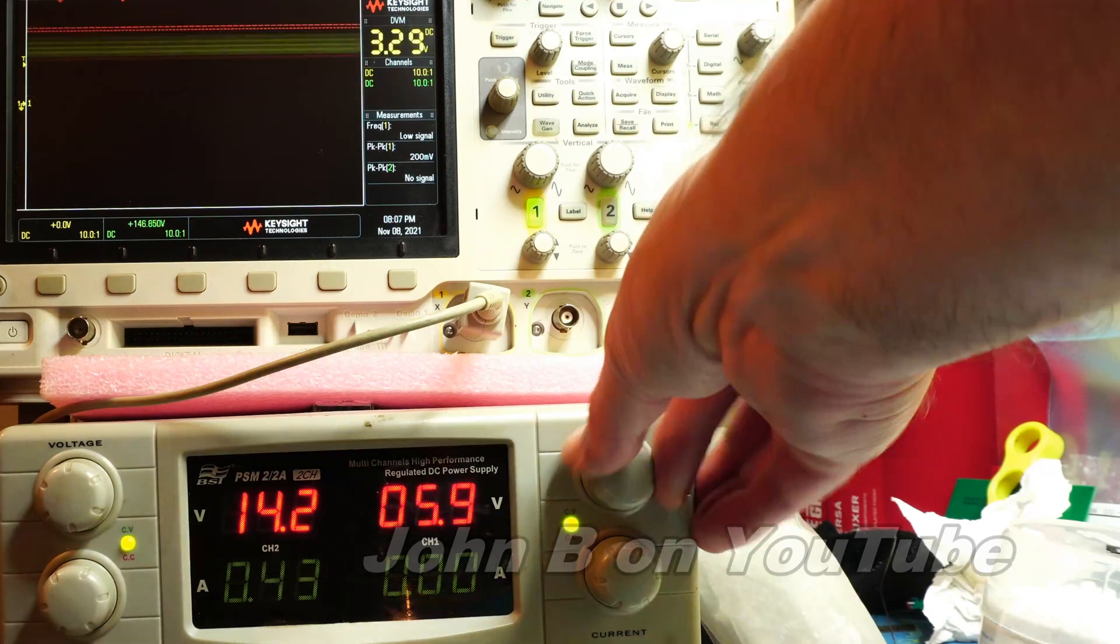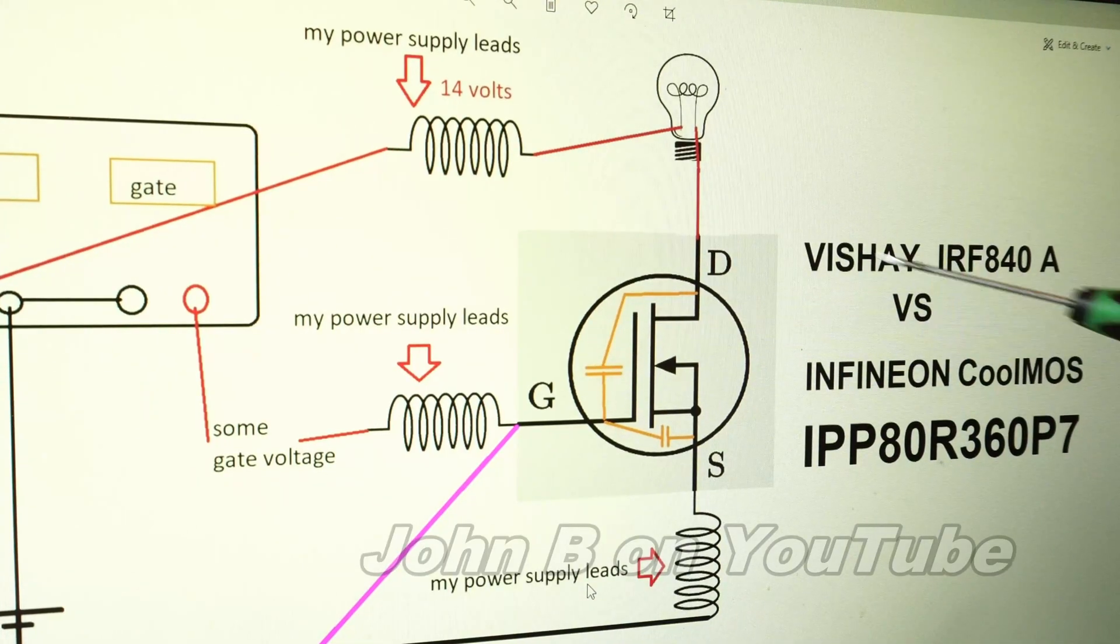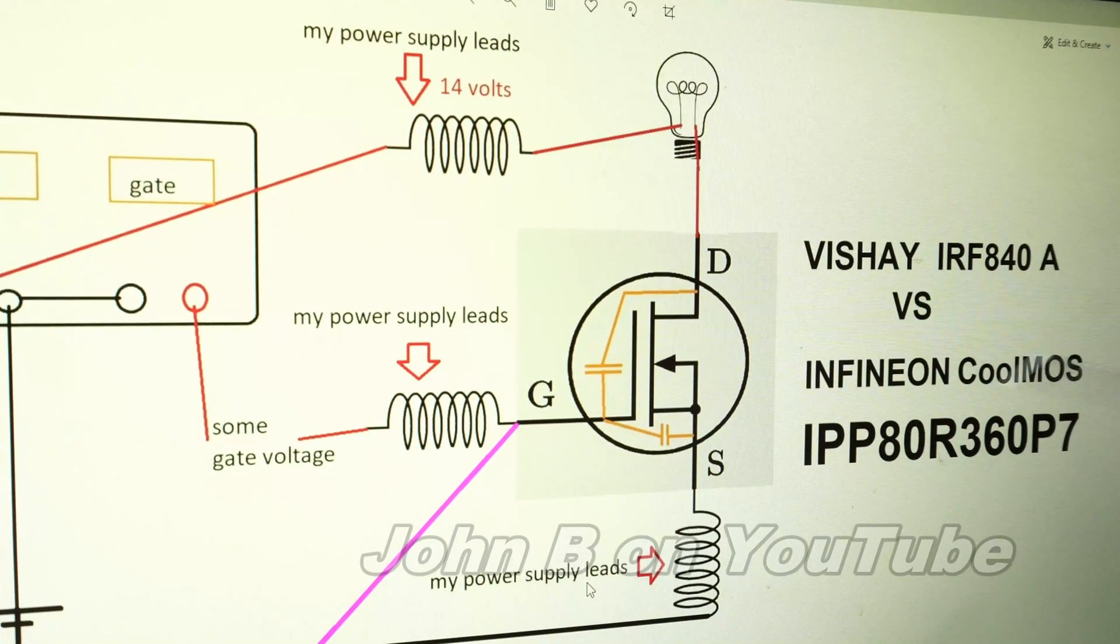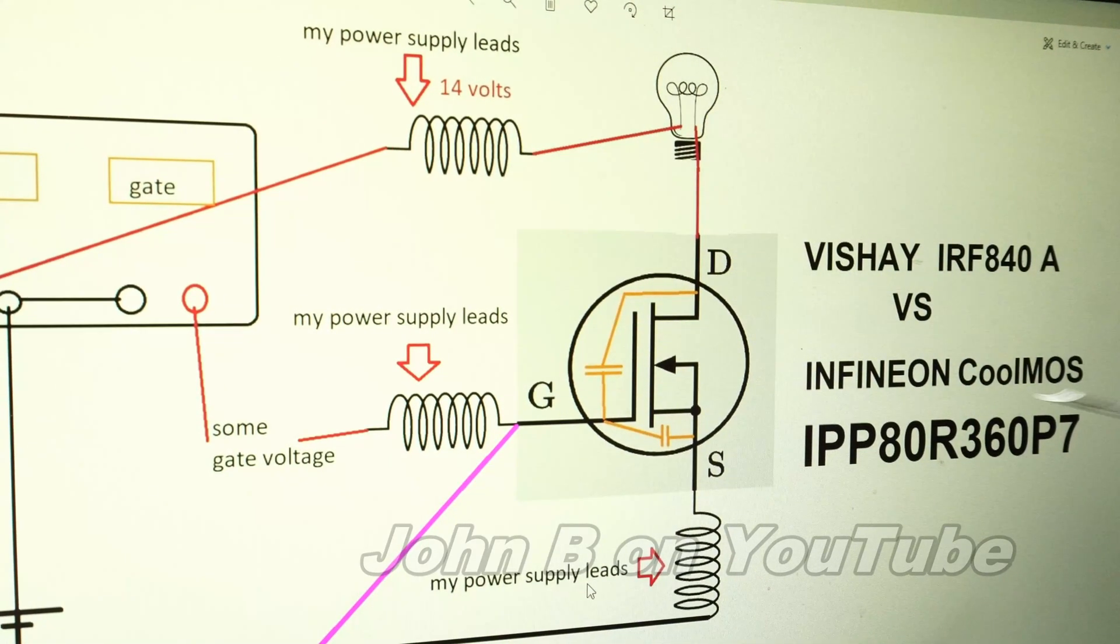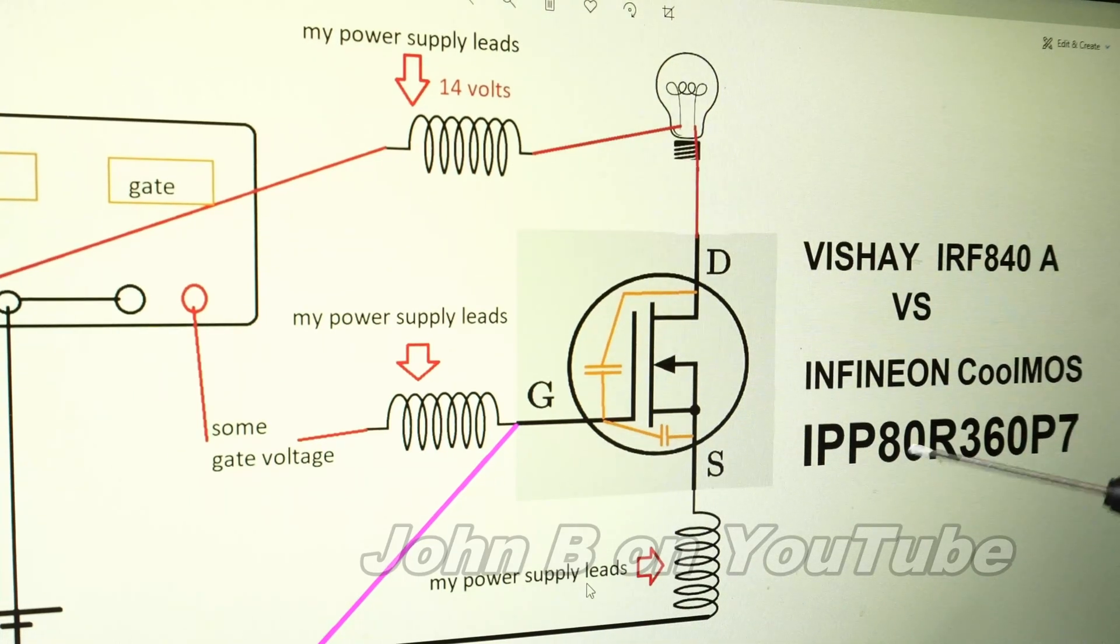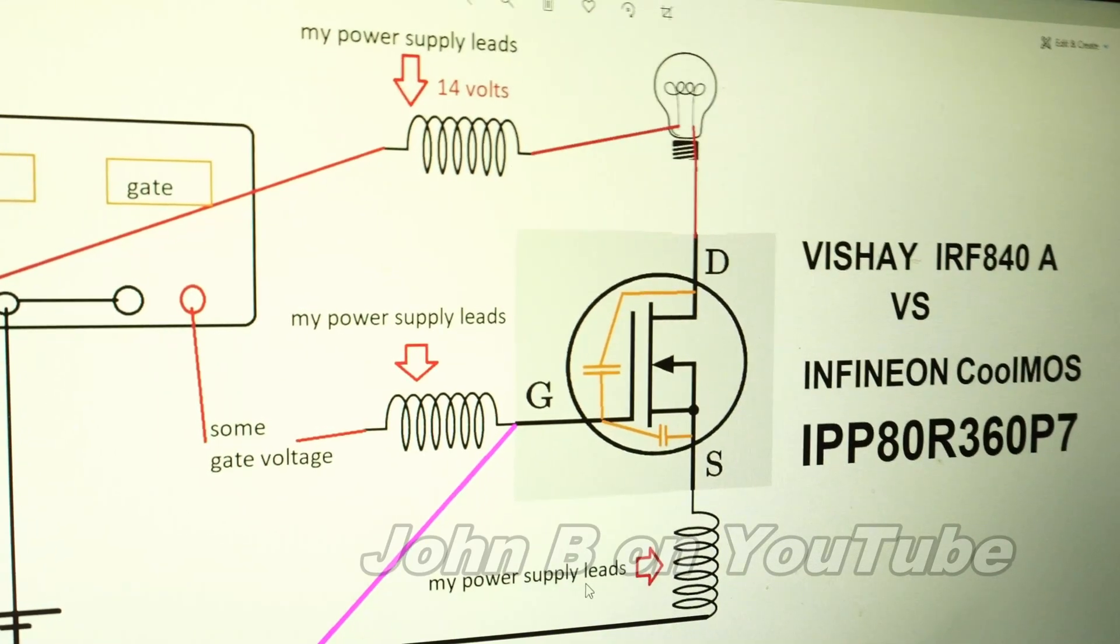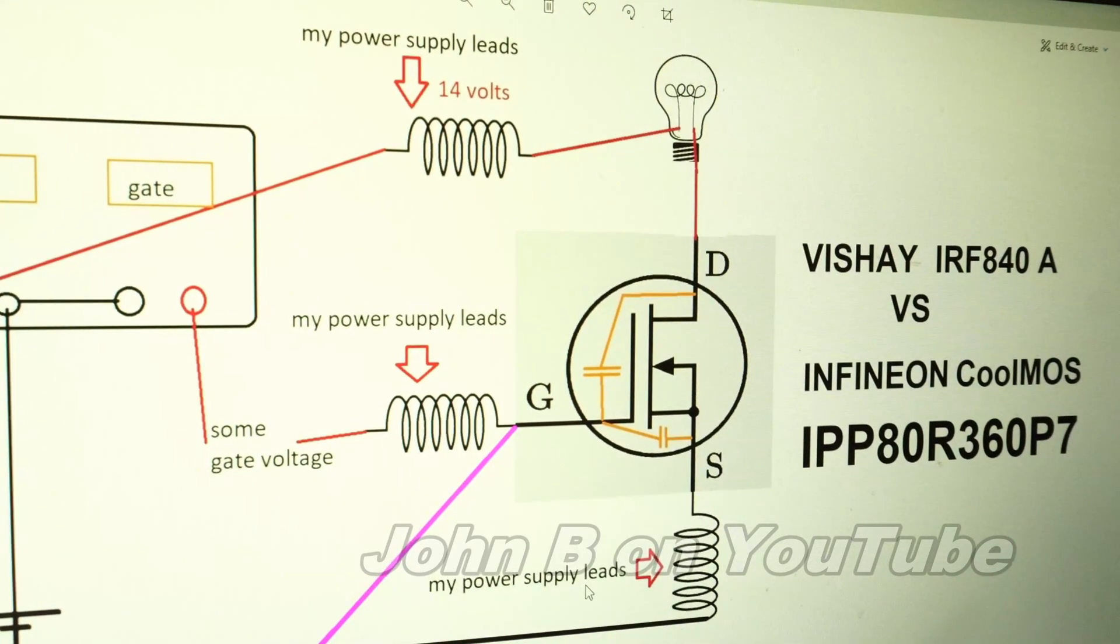The first transistor was a Vishay IRF840. The second Infineon, the cool MOS, didn't turn off. Another Infineon that didn't turn off. This model here. There's my huge amounts of inductance and all my leads. So I can't have any criticism about that.